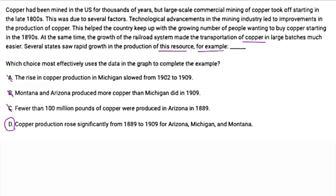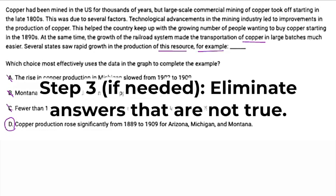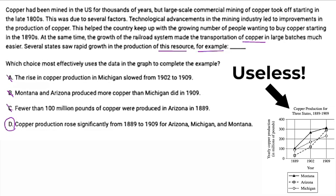Now I know what you're thinking — you said there were three steps, where's step three? Step three, which is often unnecessary, is to eliminate answers that are not true based on the visual aid. Ideally we don't have to go to this step. Here we didn't even have to look at the chart. But if you end up with two answers that match the example or the statement or the hypothesis, that's when you'll actually look at the chart and eliminate any answers that are not actually true. The trap a lot of students fall into is checking each answer to see whether it's true — and usually most answers are going to be true — but it's not about that. It's about making that connection to the example or the statement.